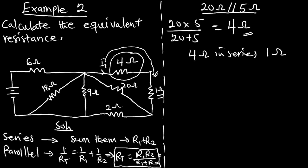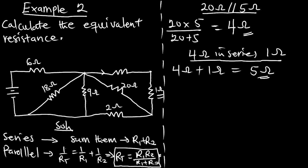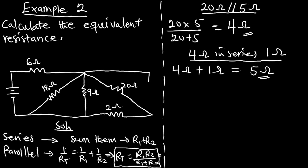Since the 4-ohm and 1-ohm resistors are in series, we sum them: 4 + 1 = 5 ohms. These two resistors can now be reduced to a single 5-ohm resistor. Redrawing the diagram, we replace those two resistors with one 5-ohm resistor.